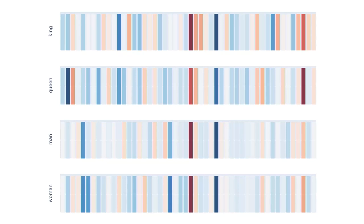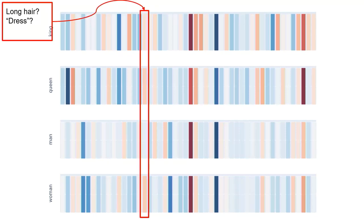I've highlighted a particular dimension where we can see more intense values for 'woman' and 'queen,' and slightly for 'king,' but not for 'man.' What could this mean — what is an attribute that woman, queen, and king might have slightly in common but man wouldn't? My best guess was something like long hair or dressing well. The idea is each dimension has some attribute or meaning; as humans we don't know what it means, but a machine can have an interpretation of what each dimension represents.